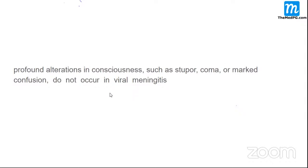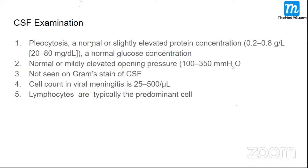If you get alteration in the level of consciousness such as stupor or coma that are marked, it is a sign of encephalitis rather than meningitis. This rule applies to bacterial meningitis as well — if stupor or coma are present, think encephalitis rather than meningitis.